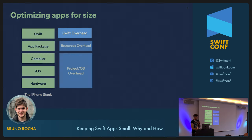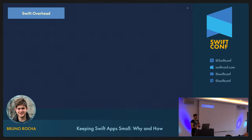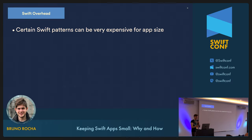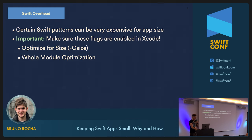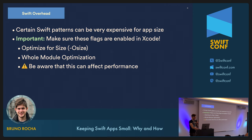The next area is Swift overhead — the overhead caused by the literal Swift code that you write. Depending on how you write certain patterns in Swift, you can cause the compiler to push a lot more stuff into the binary than you'd think. The first thing you want to make sure is that your project is configured so Swift will compile with size in mind. You do that by enabling two flags in Xcode: 'Optimize for Size' and 'Whole Module Optimization.' These allow Swift to make some pretty strong size optimizations. There's a reason they're not turned on by default — build times and runtime performance can get a little slower — but for iOS apps specifically, this tradeoff tends to be worth it.